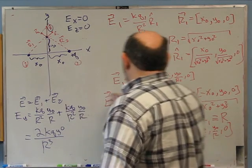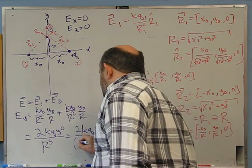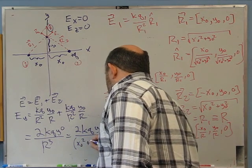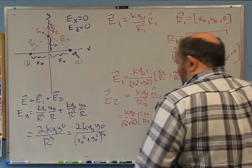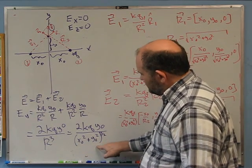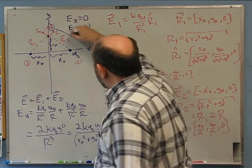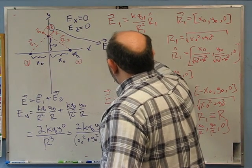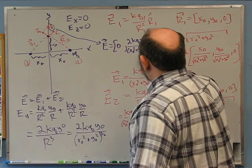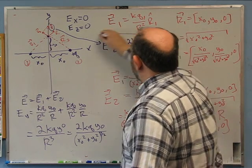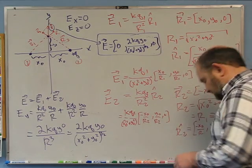So the total electric field is E⃗ = (0, 2kqy₀/(x₀² + y₀²)^(3/2), 0). That's how you find the electric field at a point on the y-axis given two equal charges symmetrically placed on the x-axis. That is problem 3.